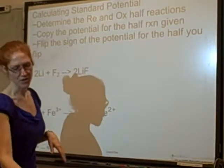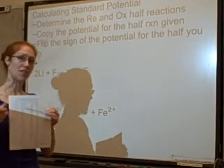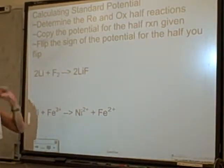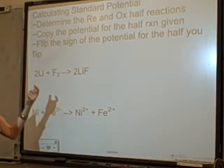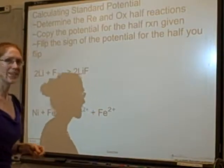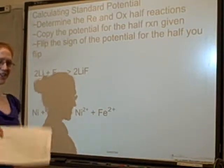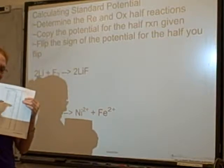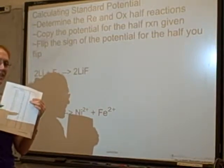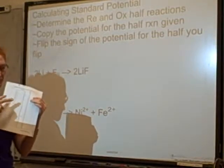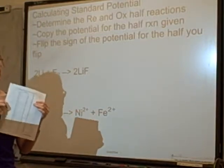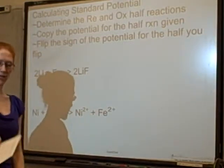These are all standard reductions, so your reduction half is going to be written in the right way. For your oxidation, you're going to have to flip the reaction, so flip the sign. Don't memorize that - just look. See that it's written in the right way and copy the potential exactly. If you flip something, instead of energy coming out, energy is going in. Don't memorize - think about it.